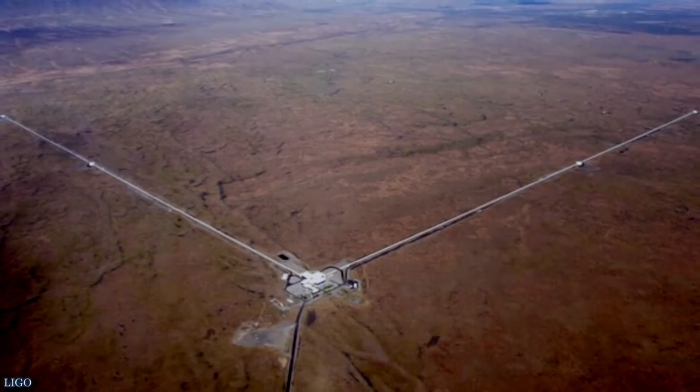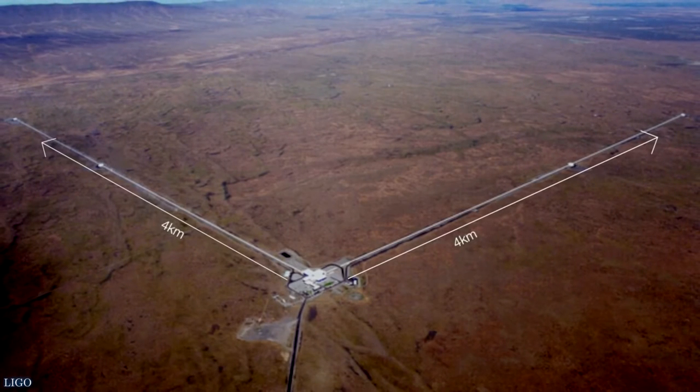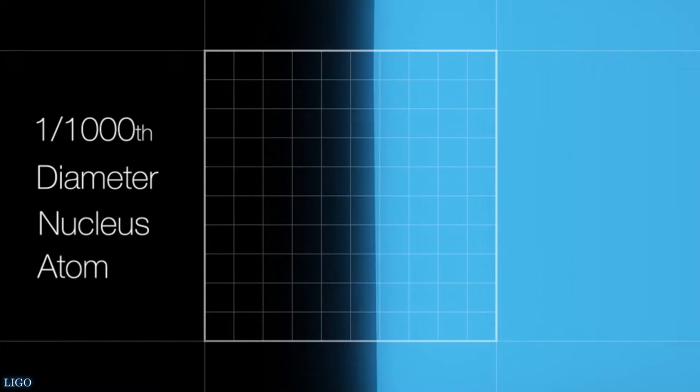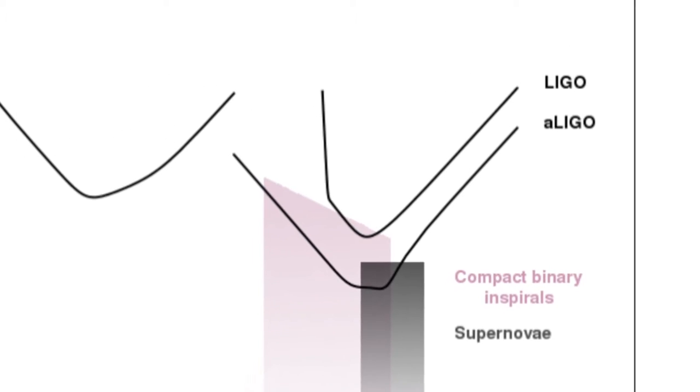Now those beams are some eight kilometers long. That's four kilometers one way, another four kilometers back. But the instrument can pick up changes along that distance, some 10,000 times smaller than a proton. And depending on the frequency of the gravitational waves, advanced LIGO can get up to sensitivities of one in 10 to the 23.